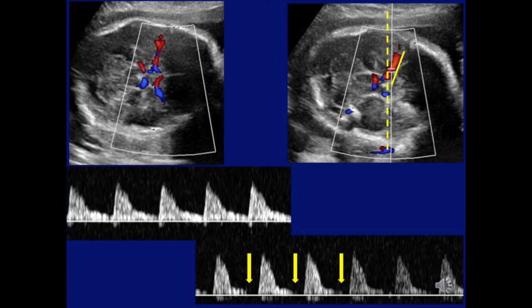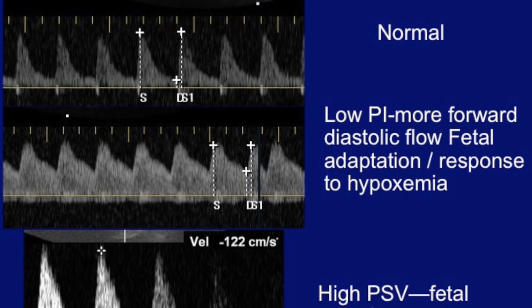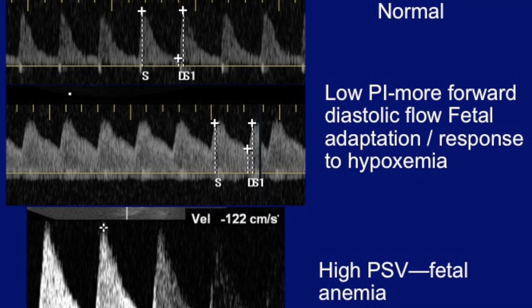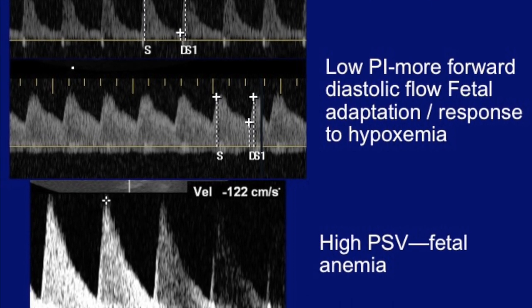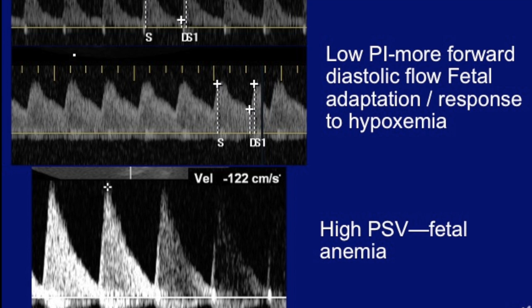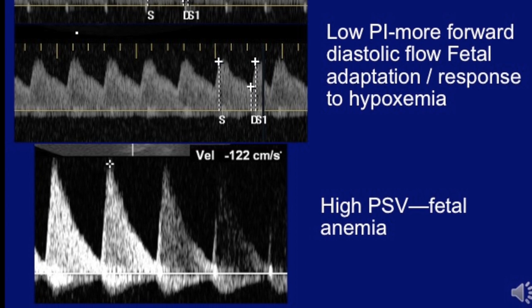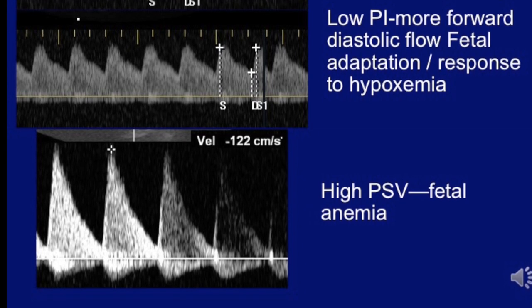If you apply unnecessary pressure on the fetal head, you start seeing a pulsatile pattern and lose the forward diastolic flow, so avoid this. In brain-sparing, vasodilatation leads to a low PI below the 5th percentile and increased forward diastolic flow — the MCA spectrum begins to look like the umbilical artery, a phenomenon called umbilicalization of the MCA. For anemia, PSV is measured in MoMs and a value greater than 1.5 MoMs is abnormal; as shown here, a PSV of about 122 at 25–26 weeks was a case of fetal anemia.